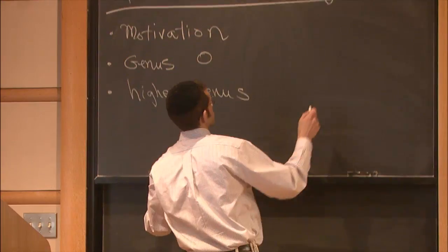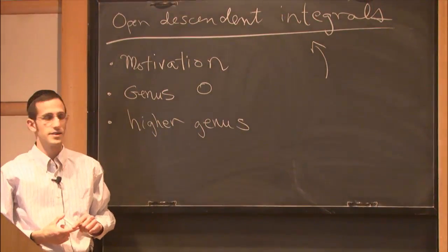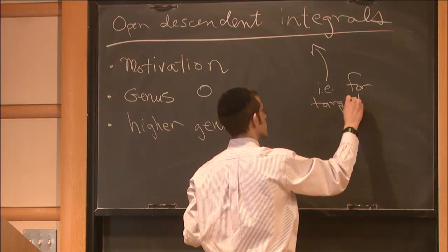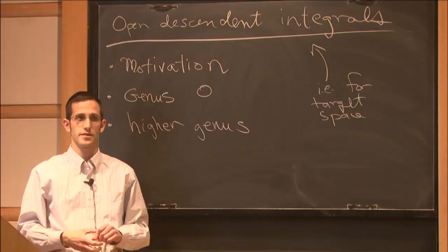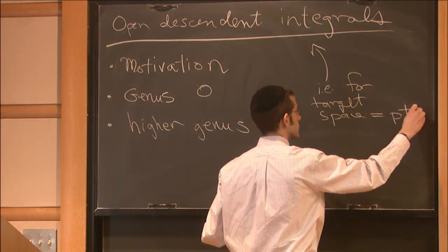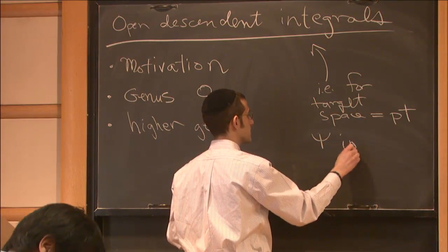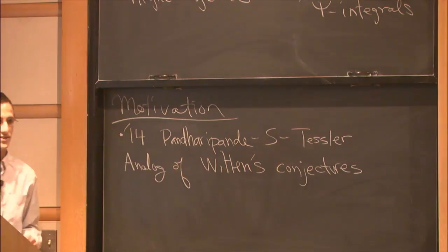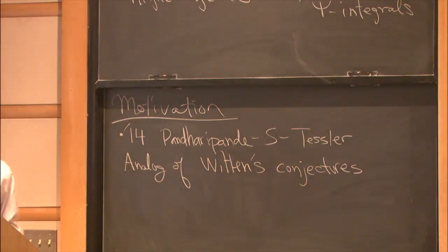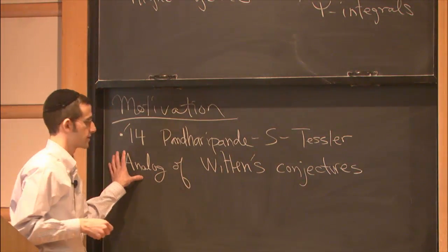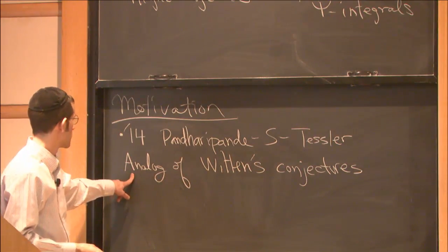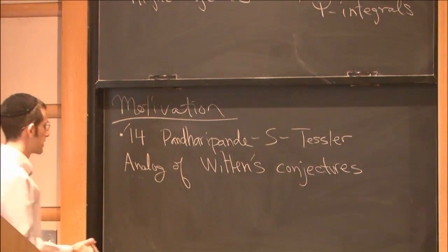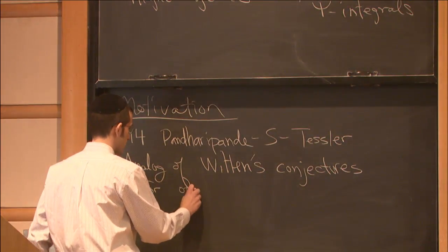When I say descendant integrals, what I mean is descendant invariants of the point. People sometimes call these psi integrals, or ancestors, or stuff like that. These are certain intersection numbers on moduli space of curves, but the twist is that instead of looking at the space of stable curves, as happens in Witten's conjectures, we look at curves with boundary, or open curves.